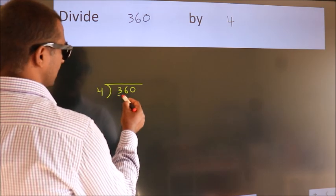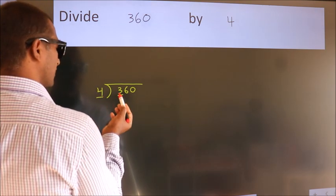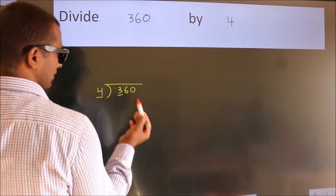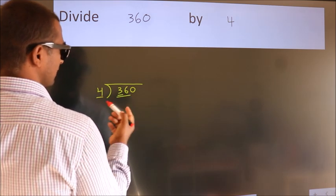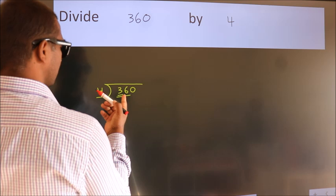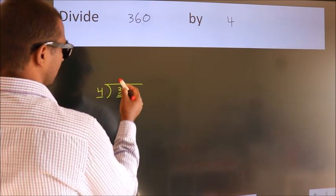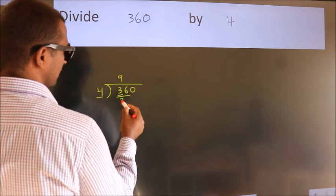Here we have 3, here 4. 3 is smaller than 4, so we should take 2 numbers: 36. When do we get 36? In the 4 table. 4 nines, 36.